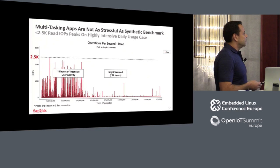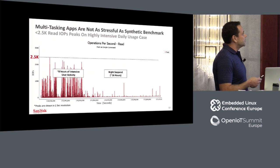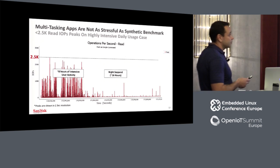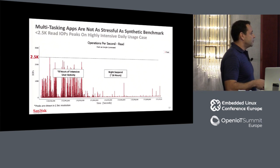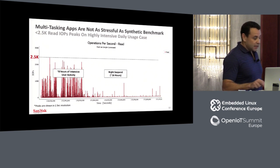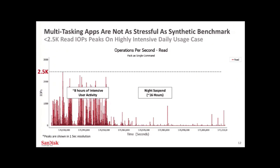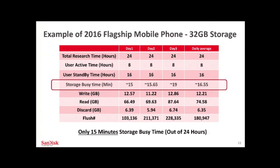When you take real user activity, you can see the maximum IOPS achievable during this activity is around two and a half thousand IOPS — measured on a flagship mobile phone. That's the maximum peak, but most of the time IOPS are quite low. You also see activity during nighttime when the device is in suspend — still some activity is running in the Android system. But again, the total busy time is only 15 minutes.